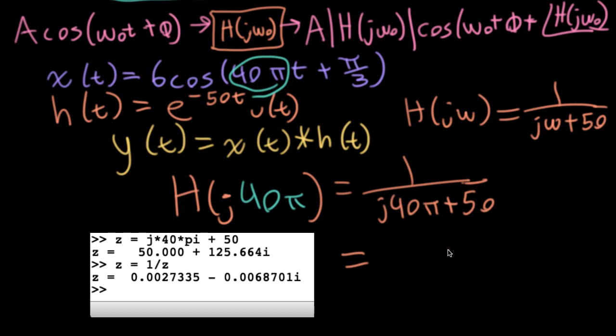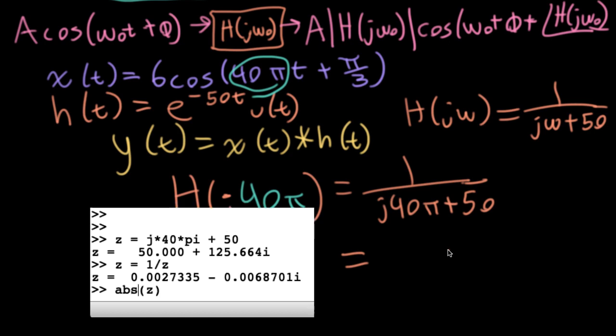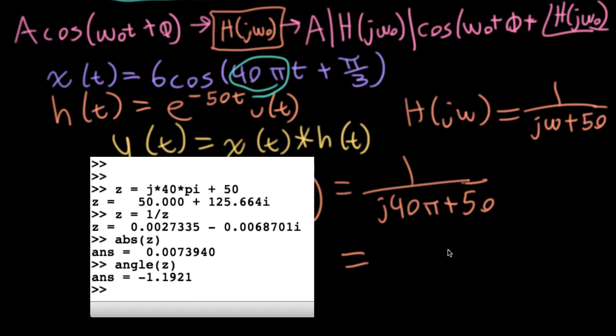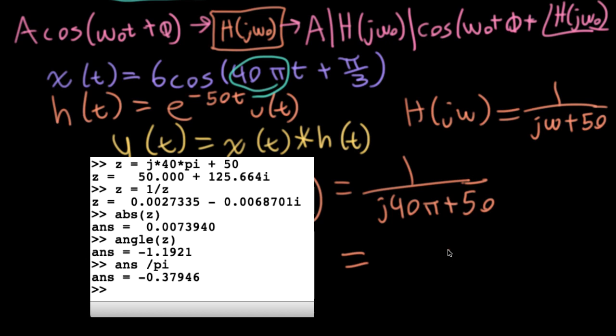Now I will ask it for the absolute value. And now I will ask it for its angle. It's traditional to write phases as multiples of pi. So let me take that number and divide it by pi. So this is like 0.007394, I'm being a little pedantic with the number of significant digits, times e to the j, the phase in terms of pi, which is a minus 0.37946.